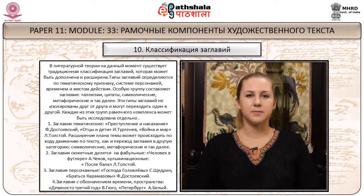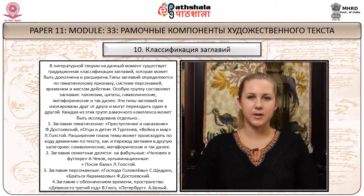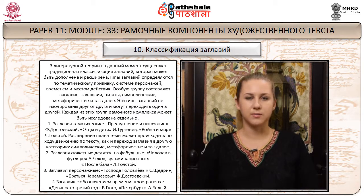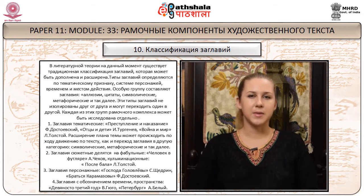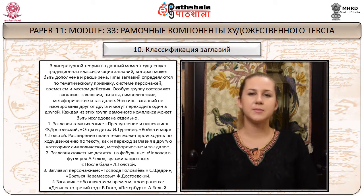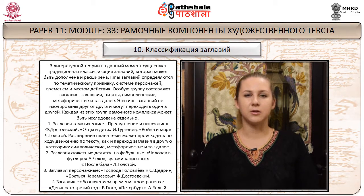Второе – заглавия сюжетные, делятся на фабульные: «Человек в футляре» (Чехов); и кульминационные: «После бала» (Толстой). Третье – заглавия персонажные: «Господа Головлёвы» (Щедрин), «Братья Карамазовы» (Достоевский). Четвёртое – заглавия с обозначением времени и пространства: «93-й год» (Гюго), «Петербург» (Белый).